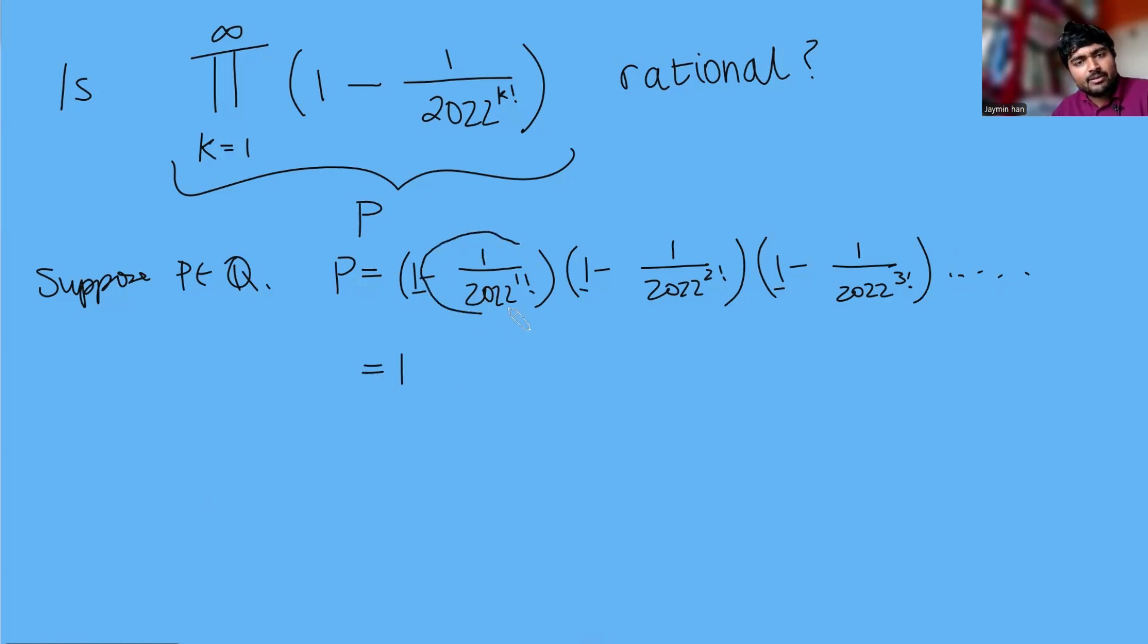I could also decide I'm going to take this minus 1 over 2022 factorial term, maybe the 1 from this bracket and maybe this term from here and then ones from all the others as well. What would I get if I multiply that out? Well the ones are obviously going to multiply to 1. What about these two terms? I've got two negatives so that makes a positive term and it's going to be 2022 to the power of 1 factorial plus 3 factorial.